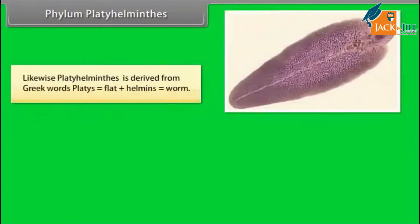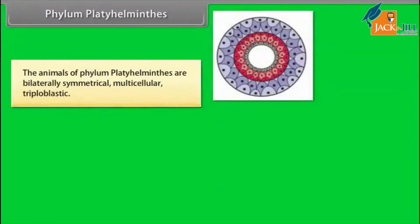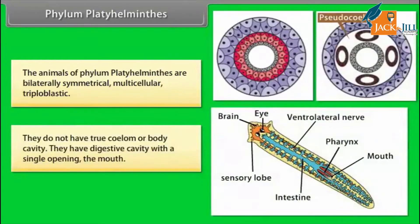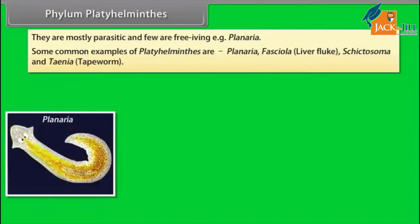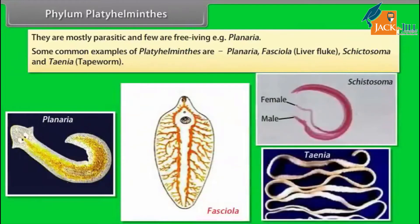Phylum Platyhelminthes. Platyhelminthes is derived from Greek words platys, flat, plus helminthes, worm. They have leaf-like or ribbon-like dorsoventrally flat body, so they are also known as flatworms. The animals of Phylum Platyhelminthes are bilaterally symmetrical, multicellular, and triploblastic. They do not have a true coelom or body cavity. They have a digestive cavity with a single opening, the mouth. They are mostly parasitic and few are free-living, example Planaria. Some common examples are Planaria, Fasciola, liver fluke, Schistosoma, and Taenia, the tapeworm.